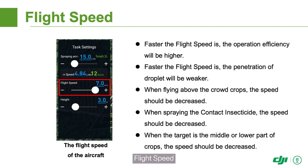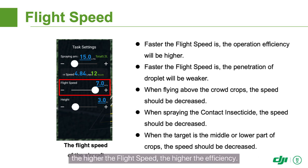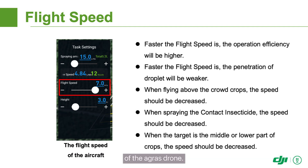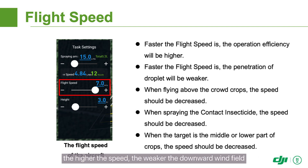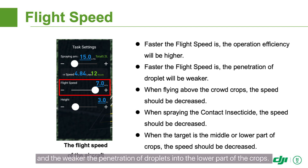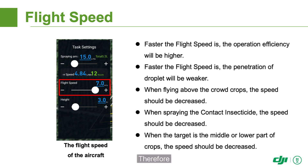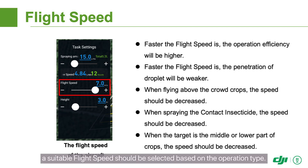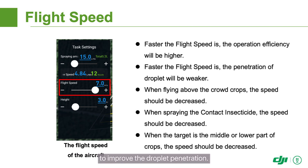Flight speed: The flight speed has a major impact on operational efficiency and performance. Given the same spraying amount, the higher the flight speed, the higher the efficiency. The flight speed also directly influences the downward wind field of the drone. Within a certain range, the higher the speed, the weaker the downward wind field and the weaker the penetration of droplets into the lower part of the crops. Therefore, a suitable flight speed should be selected based on the operation type. Dense crops and contact pesticides require a lower flight speed to improve droplet penetration.